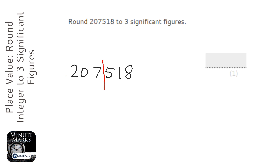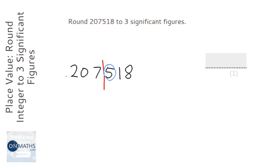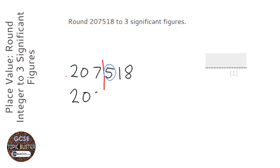All the numbers to the right of that line are going to reset to zero. But before they do, we need to look at this number — this is called our decider number. If that number circled in blue is five or more, it means the seven goes up to eight. If it's less than five, the seven stays the same. Now, because it is five, that seven will go to an eight.